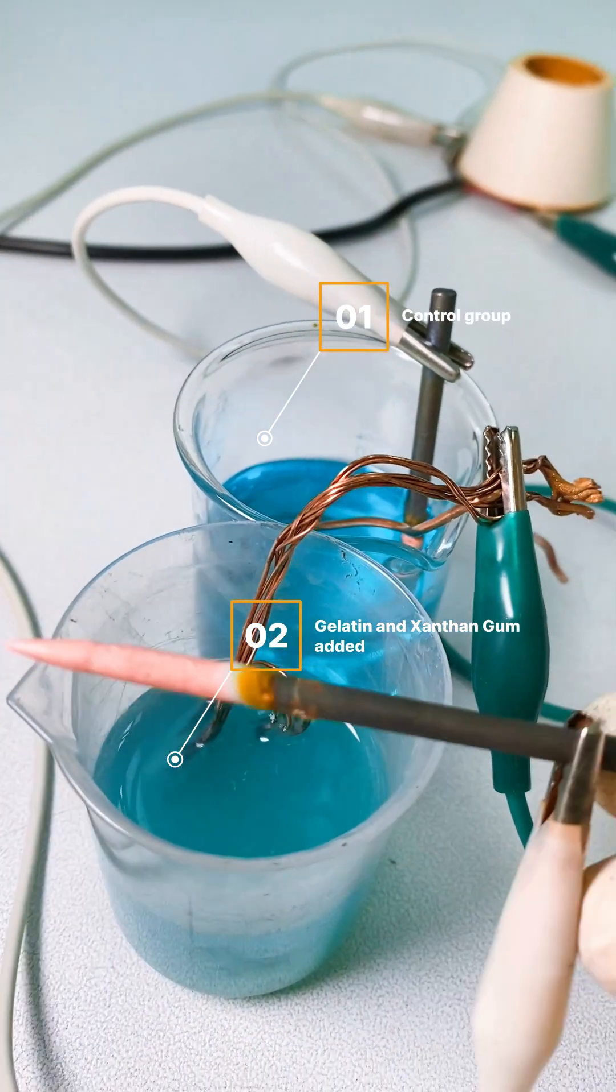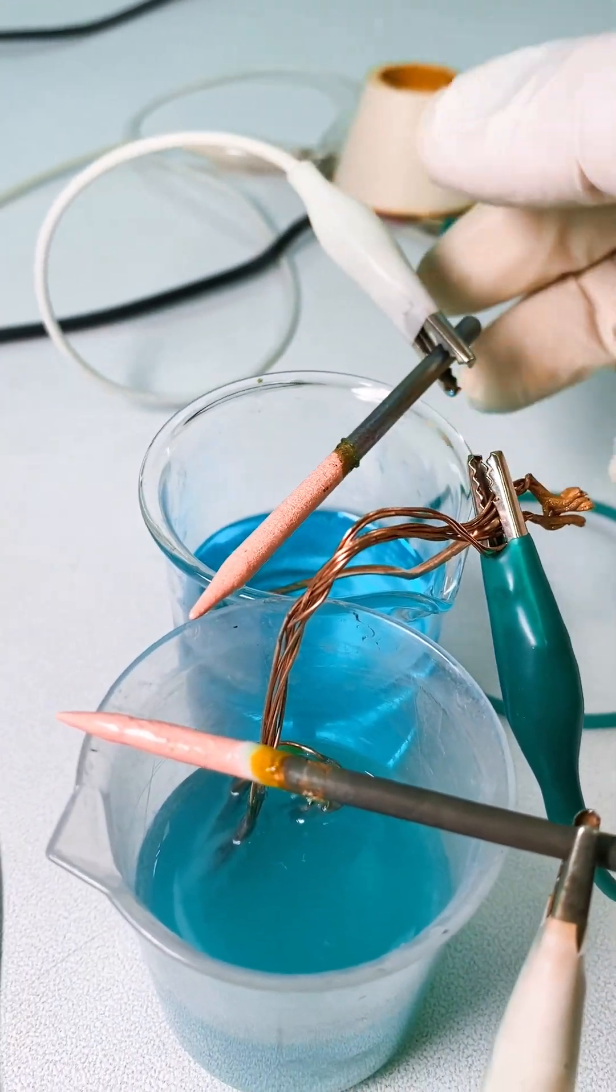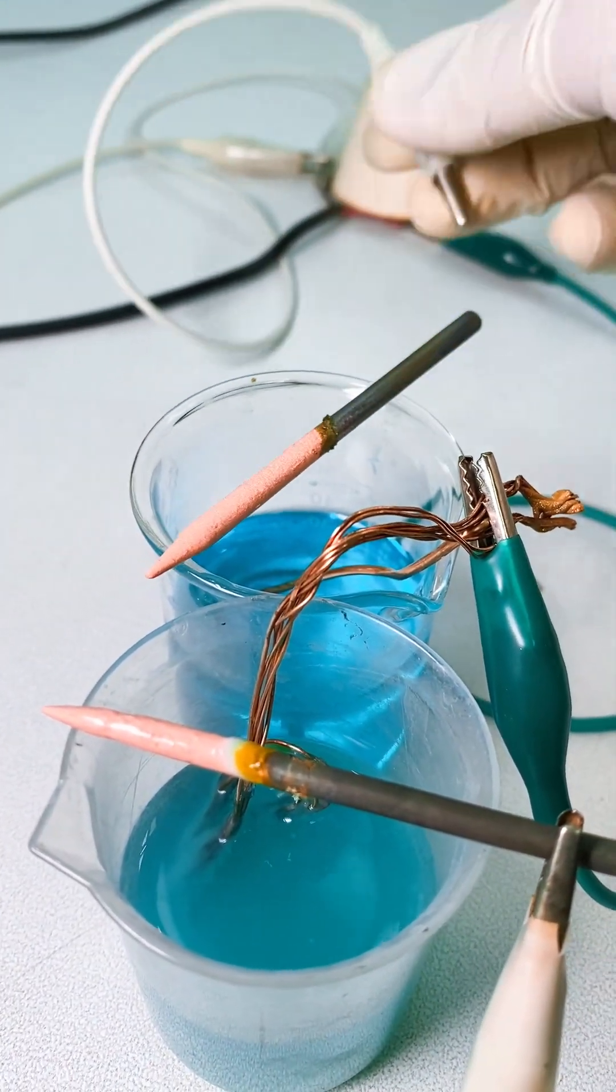Today we have two samples: one is without gelatin and xanthan gum, and the other one is with both secret ingredients. We can see the immediate result.